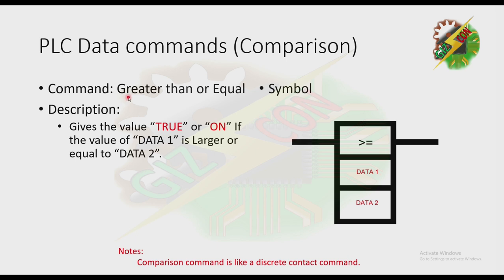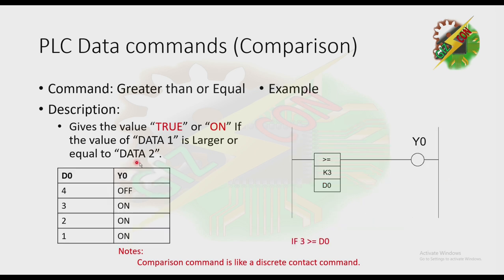Next is Greater Than or Equal — it gives the value true or ON if the value of Data 1 is larger than or equal to Data 2. This is the symbol for this command. The command means: if 3 is greater than or equal to D0. From the table: if D0 is 4, Y0 is off; if D0 is 3, Y0 is on; if D0 is 2, Y0 is on; and if D0 is 1, Y0 is on.